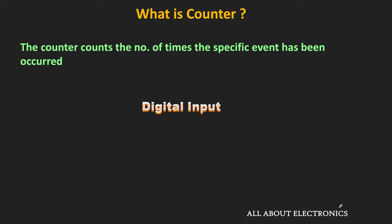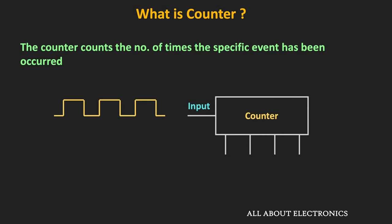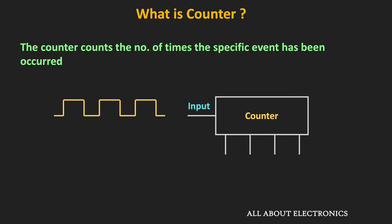If the event which we want to register is not in the form of digital input, then first of all, with the help of a transducer and other circuits, it needs to be converted into digital input. In the case of the counter, these events are applied in the form of digital input pulses. The counter takes the high-to-low or low-to-high transition in the input pulses and based on that, it registers the specific event.